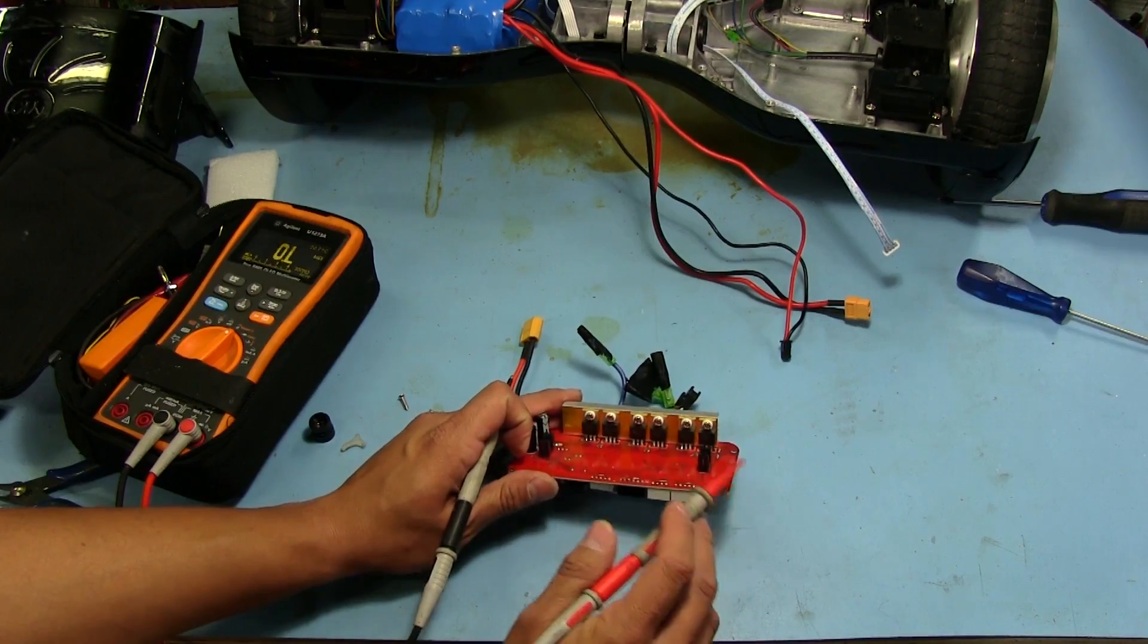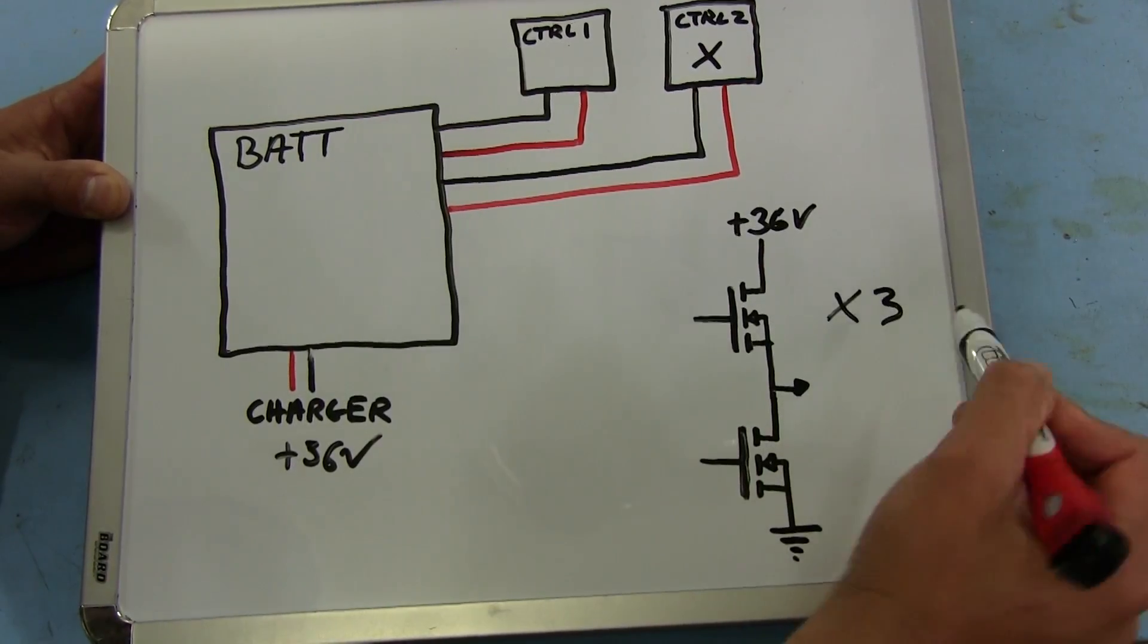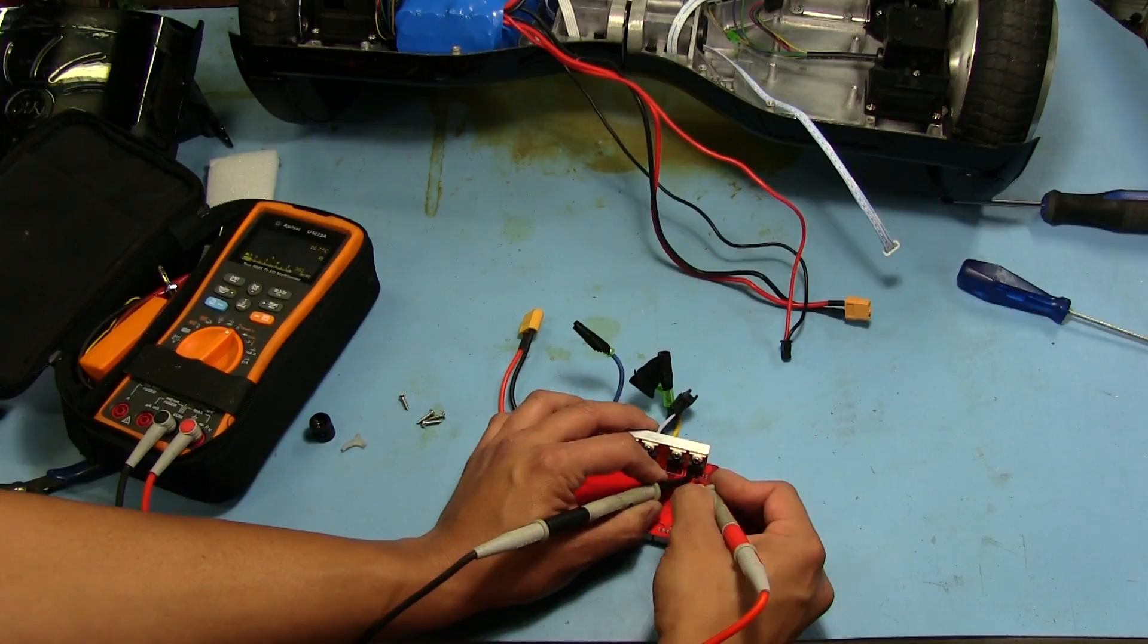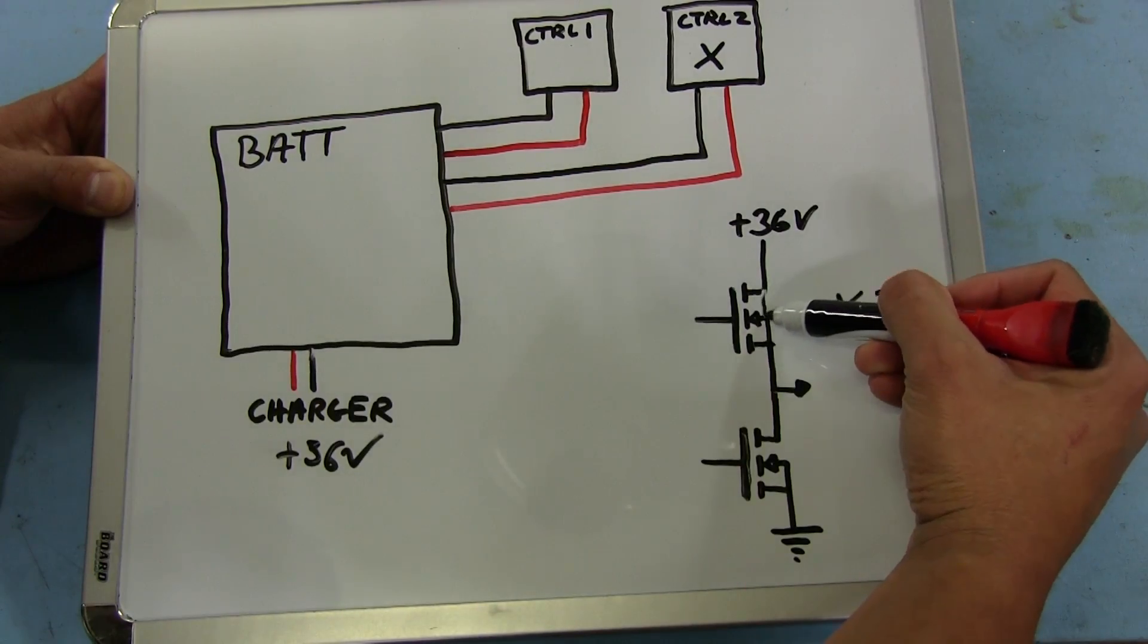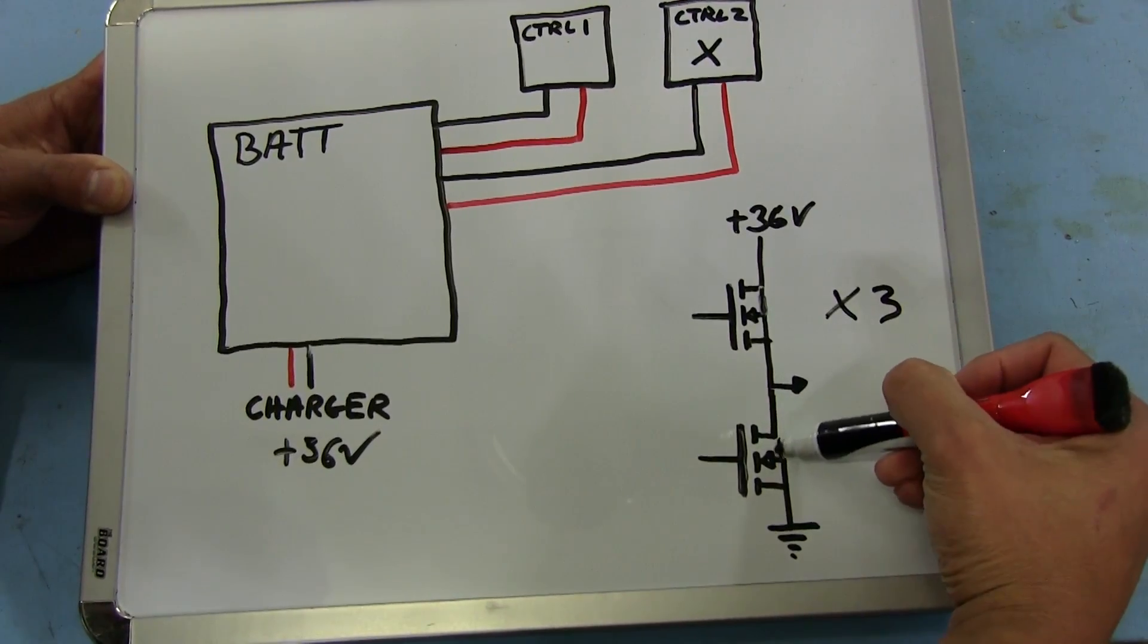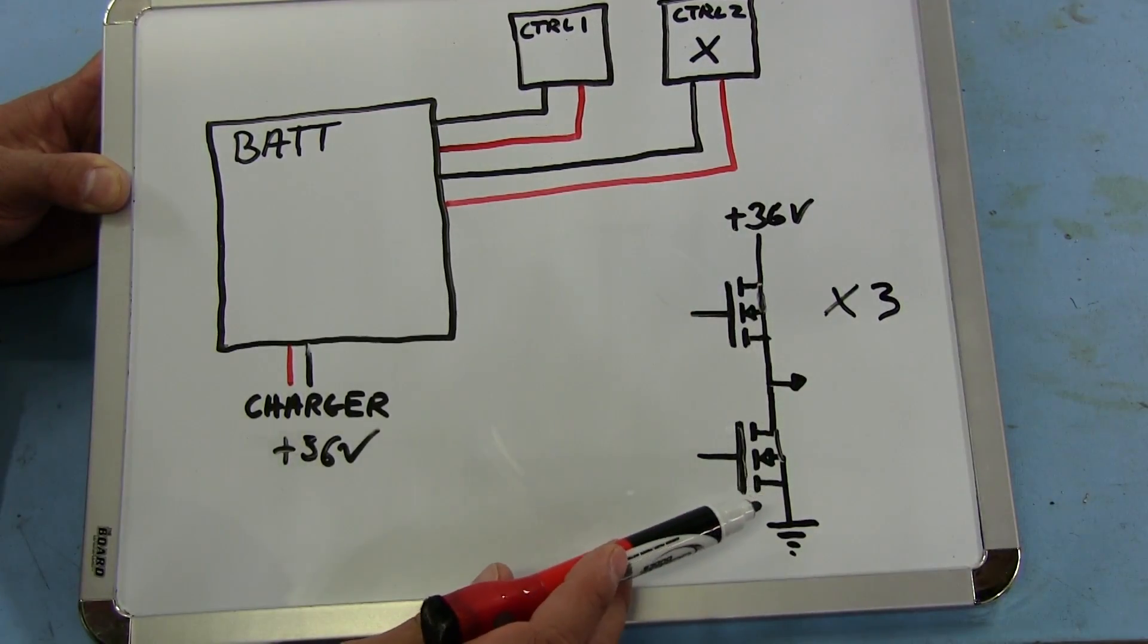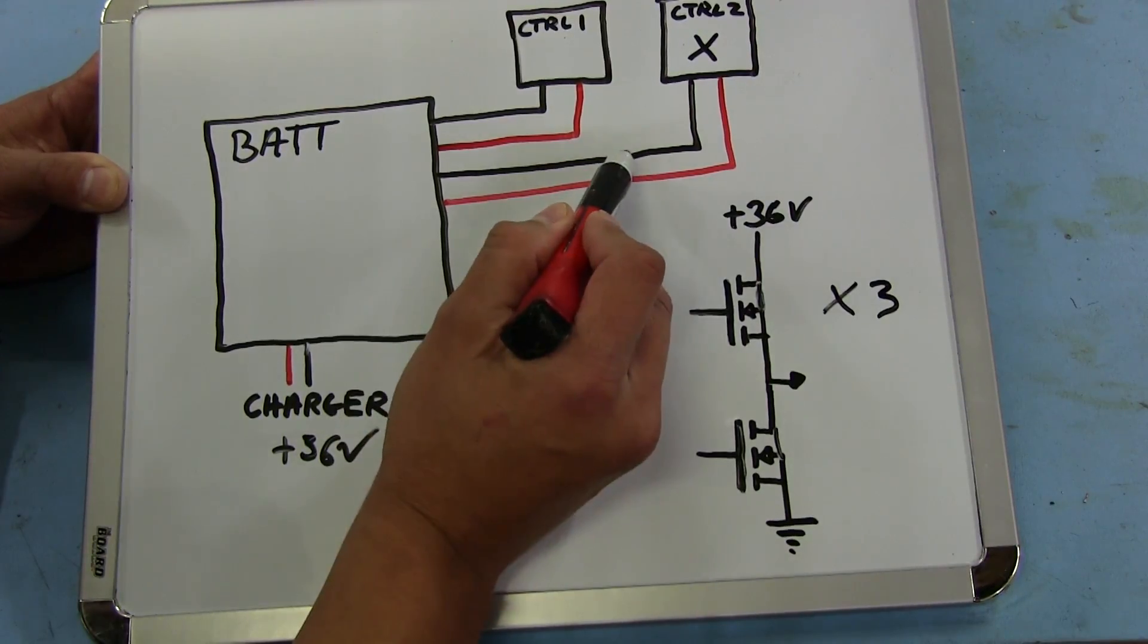There's actually three of these circuits, one for each phase, but only one of them, the two MOSFETs, had shorted out. So basically it was a continuity between here and here, which would have shorted out the positive 36 volt directly to ground, which would have been basically like a short like that.